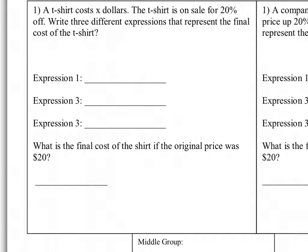Alright, looking at our do now, we've got a couple problems where we're being asked to write the expression and then we're going to be finding the value. It tells us a t-shirt costs x dollars, the shirt is on sale for 20% off, and we want to write three different expressions that represent the final cost of the t-shirt.